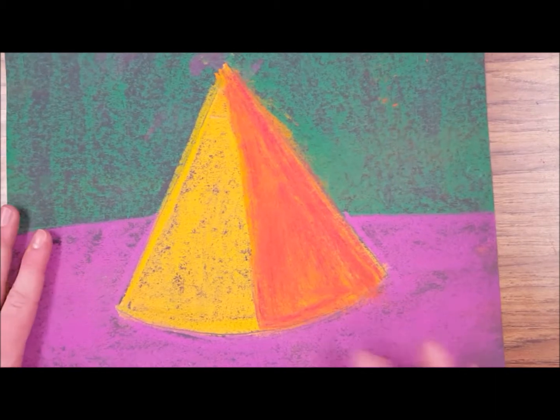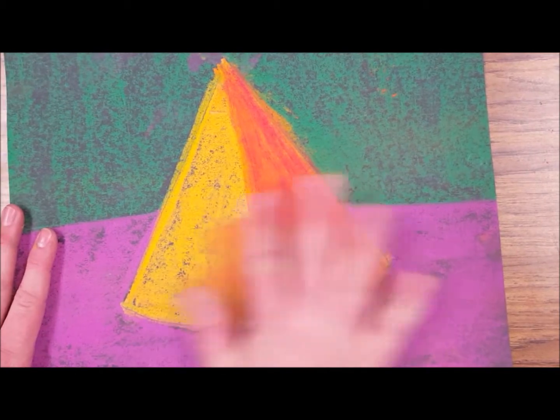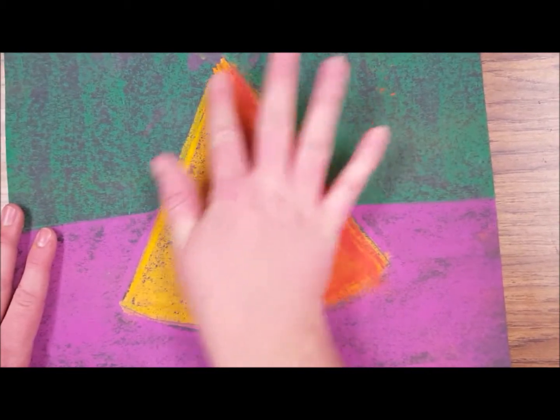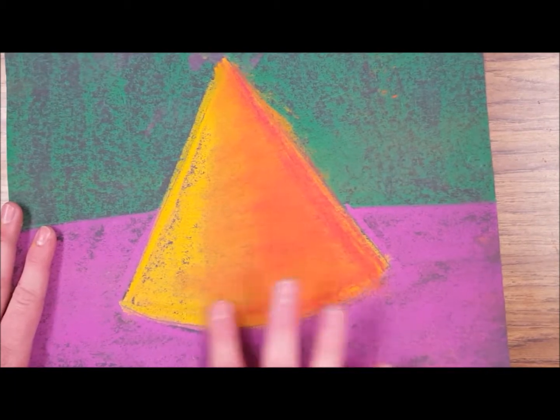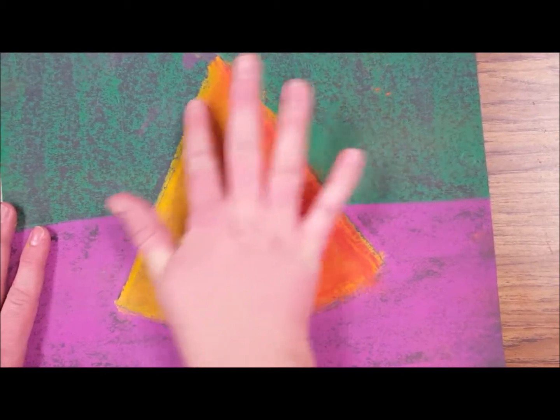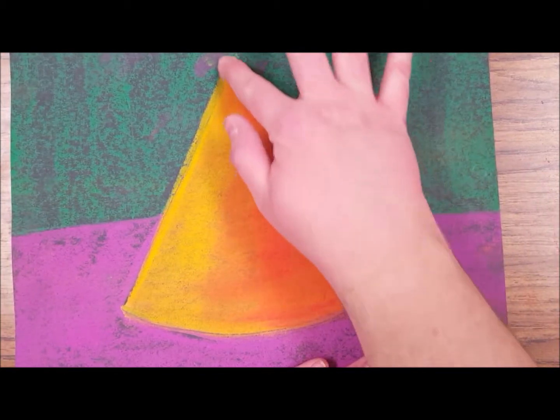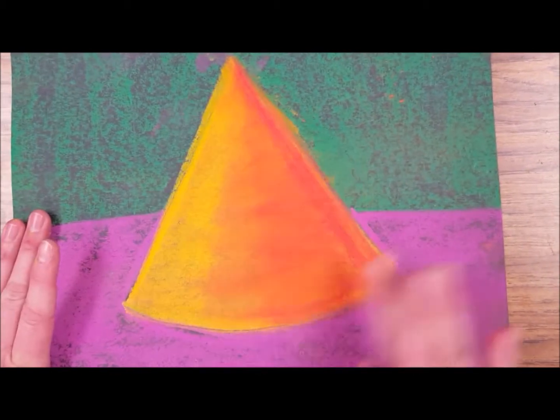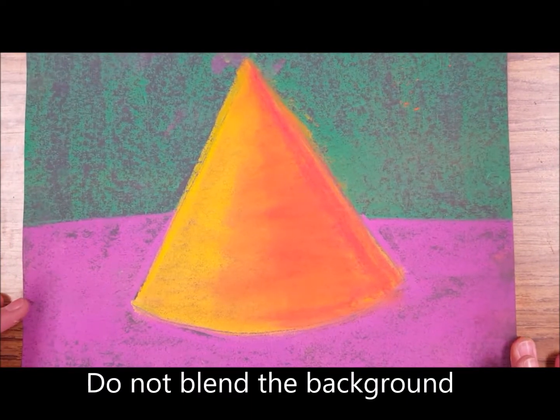Now the next part is blending. So I'm actually going to take my finger and blend back and forth all the way from top to bottom, blending back and forth, smooth out the whole cone so it looks nice and smooth. And I'm actually going to leave the background not smoothed out to give it a little bit of texture.